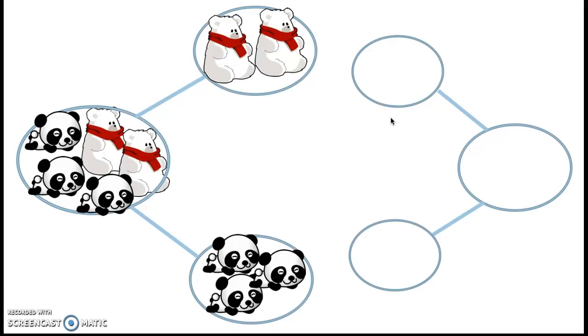Okay, are you ready, friends? Don't keep going if you don't have your number bond filled in with your numbers. All right, so here we go. I know that I saw how many polar bears as one of the parts. Perfect. Two. Excellent. And then I saw how many panda bears as the other part. Three. Good job. How did you come up with those numbers?